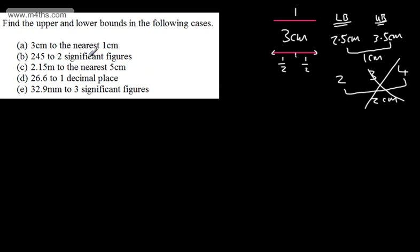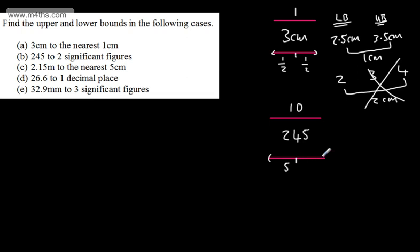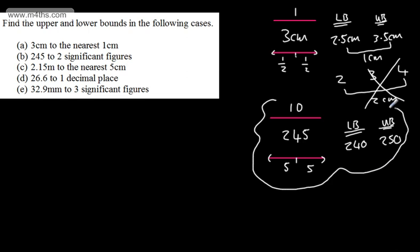Next: 245 to 2 significant figures. The second significant figure is the 4, which is in the tens column, so we're dealing with an interval of 10. Splitting that in half means going 5 below or 5 above. The lower bound (LB) is 240 and the upper bound (UB) is 250. Remember, 250 is a strict inequality — it won't include 250 exactly, as that would round up to the next value.